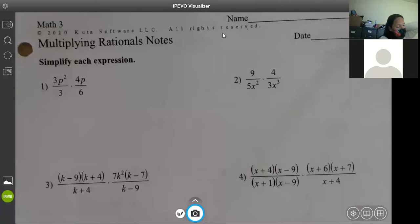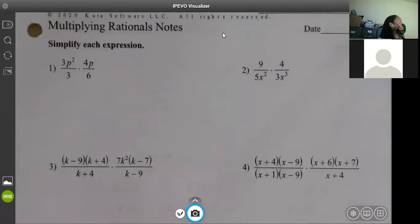So today we're going to work on multiplying rationals, and guys, this is super simple. So again, if you can factor, you're good to go. It's the same concept as yesterday, just we have multiple sets of fractions. So what you're going to do is you're going to look, and I'll say up and down first, and then diagonally.